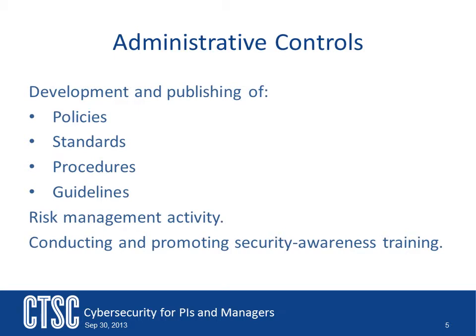Administrative controls are the process of developing and ensuring compliance with policy and procedures. They tend to be things that employees may do, must always do, or cannot do. This is the category that your policies and procedures fall into. One important control to put into place from the very start is that of regular reviews. A good security program is a living document. Regular risk assessments should take place, and reviews of controls currently in place need to be performed. Make sure you also develop policies on training and awareness for your staff.